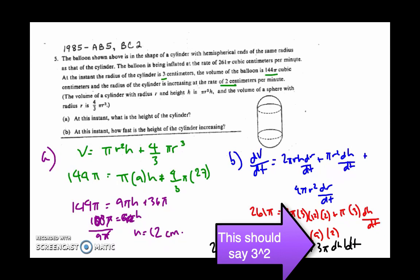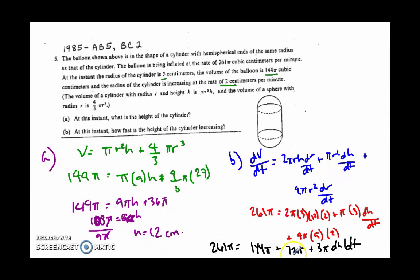Now 144 and 72 will get me to 216. And so when I subtract 261 minus 216, which I need to come way up here, I'm going to get 45 pi.